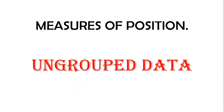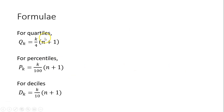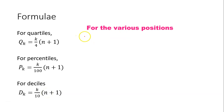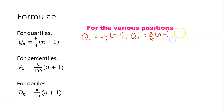Welcome, guys. In today's tutorial we're going to look at measures of position for ungrouped data. These are the formulas we're going to use. For quartiles: first quartile is 1/4 × (n+1), second quartile is 2/4 × (n+1), and third quartile is 3/4 × (n+1), where n represents the number of values in the data set.